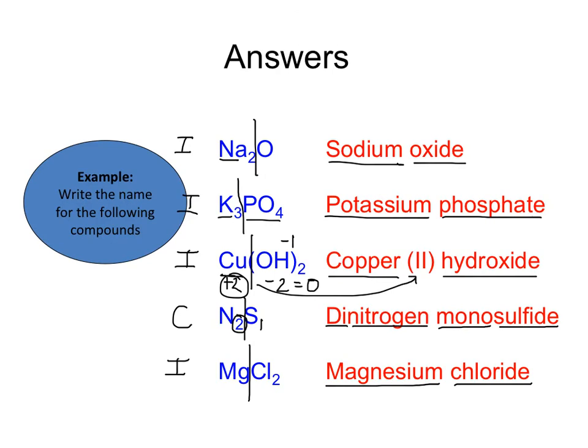Remember that the subscripts really don't have any importance in naming binary ionic compounds. Only in the ternary ionic compound, and that will help you predict the charge of the type 2 transition metal.